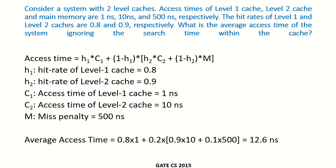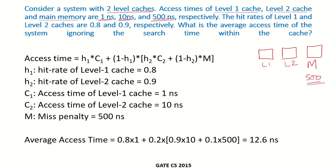Now consider a second example with two-level caches. The access times for L1 cache, L2 cache, and main memory are 1 nanosecond, 10 nanoseconds, and 500 nanoseconds respectively. Importantly, when this data is given, the time for each level includes the time taken to access all previous levels — so the 500 nanosecond figure includes the time to check L1 (miss), then L2 (miss), and finally access main memory.